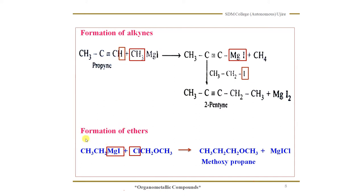Another important class of organic compound is ethers. Ethers can be prepared starting from a Grignard reagent. Let me take the example of ethyl magnesium iodide. Ethyl magnesium iodide is treated with a haloether, that is alpha haloether. When these are made to react with each other, we will get MgICl, and the remaining product is CH3CH2CH2OCH3, which is methoxypropane, which is an ether. Therefore, an ether can be prepared starting from a Grignard reagent.